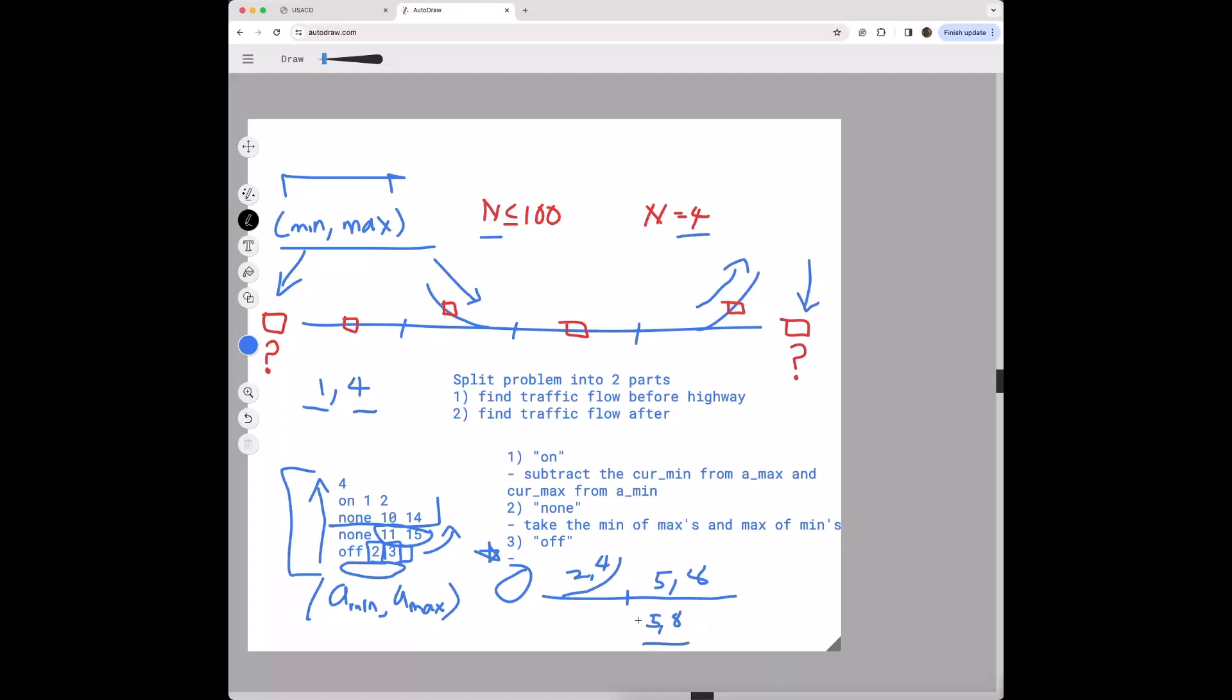Because basically whatever's here is going to equal to the amount that comes off plus whatever's here.